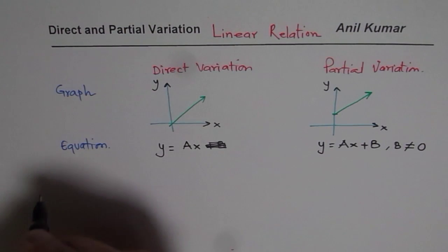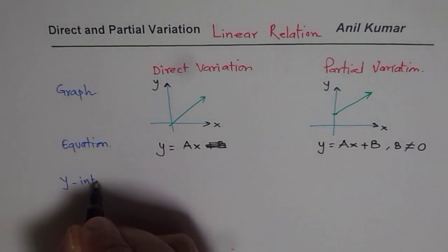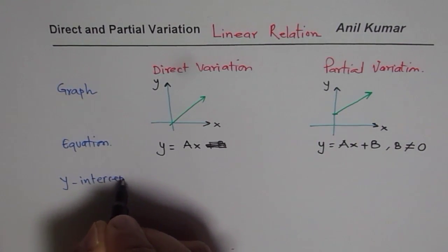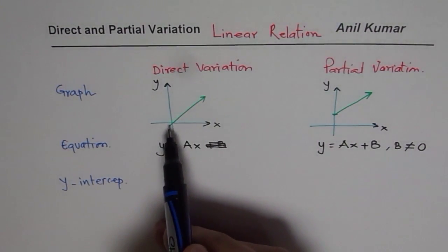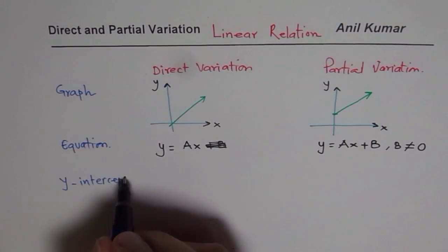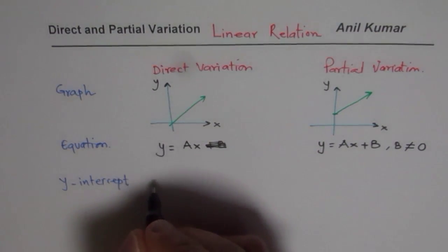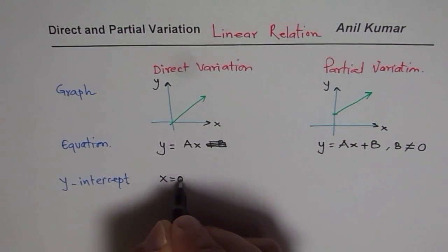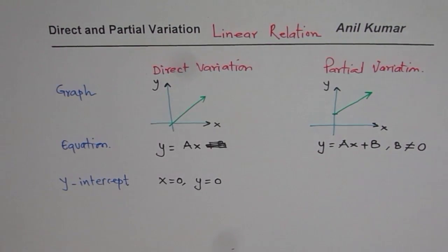And lastly, we could also check with the help of y-intercept. Now, y-intercept is a point where the graph will cut across y-axis. So at y-intercept, we know x is zero. So at this point, x is equal to zero, and if you get y also equals to zero, then it becomes direct variation.